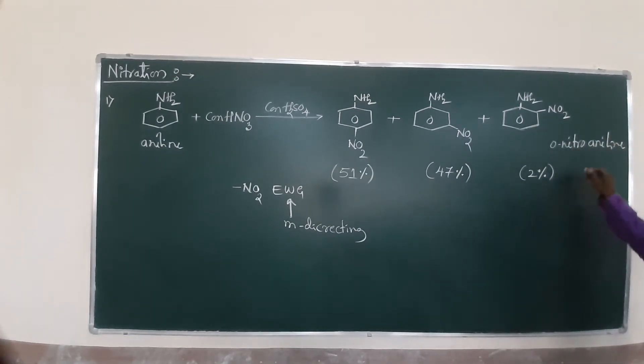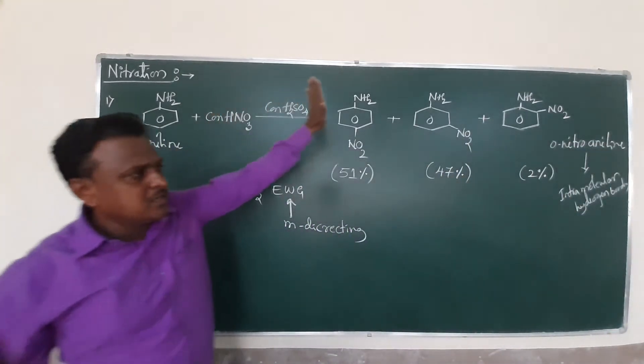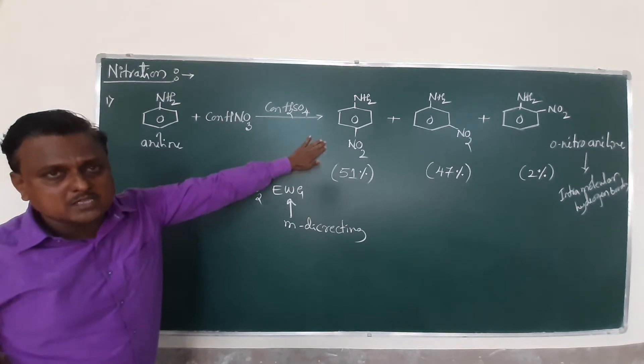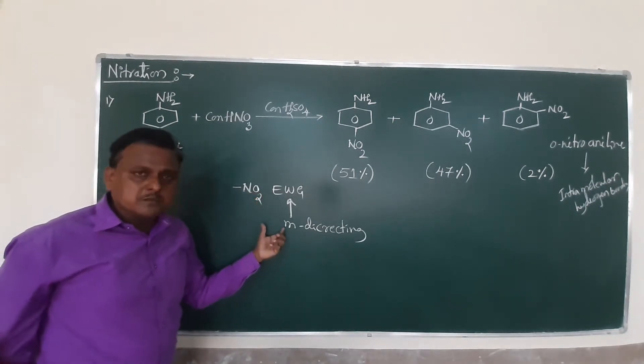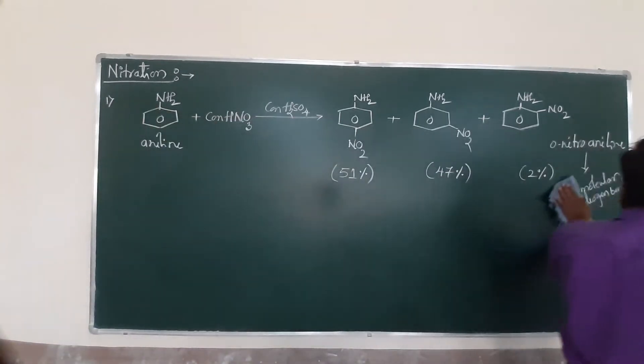So why this ortho nitraniline is very less? Yes, due to its formation of intramolecular hydrogen bonding. Due to intramolecular hydrogen bonding, there is a repulsion that starts automatically. The formation of the product or yield must be less. And repeat once again, friends, when aniline undergoes nitration to form three products, ortho, meta and para. So in this case, para as well as major is similar to the meta also because an electron withdrawing group is always meta directed. This is a simple reaction of your nitration in your surface.